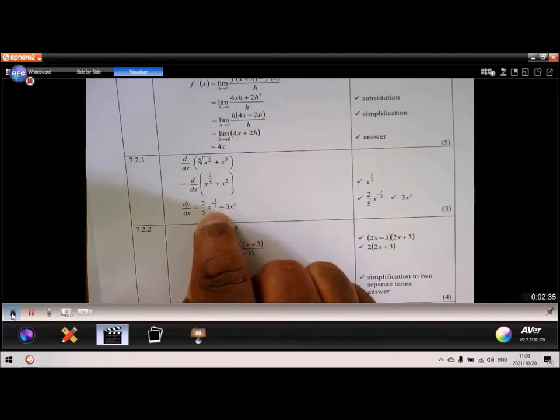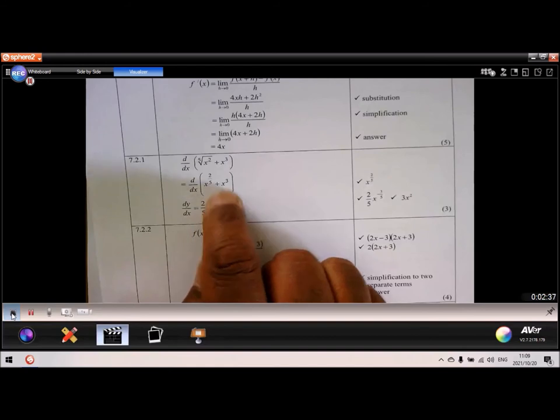So 2 fifths times 1 in front of x is 2 fifths. Then 2 fifths minus 1 is negative 3 fifths. The same here. 3 times 1 is 3. 3 minus 1 is 2. And that's your answer.